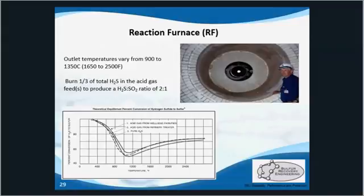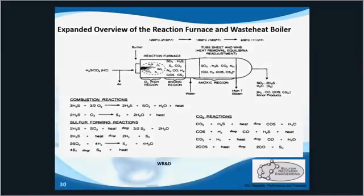Temperatures can be anywhere from 900 to 1350 degrees Celsius. 900 is a little cold — that's our minimum stable flame temperature. We like to recommend 1050 in a gas plant to ensure all BTECs and other contaminants are destroyed. In a refinery where there's a SWS feed stream containing ammonia, we recommend 1150 minimum to destroy the ammonia.